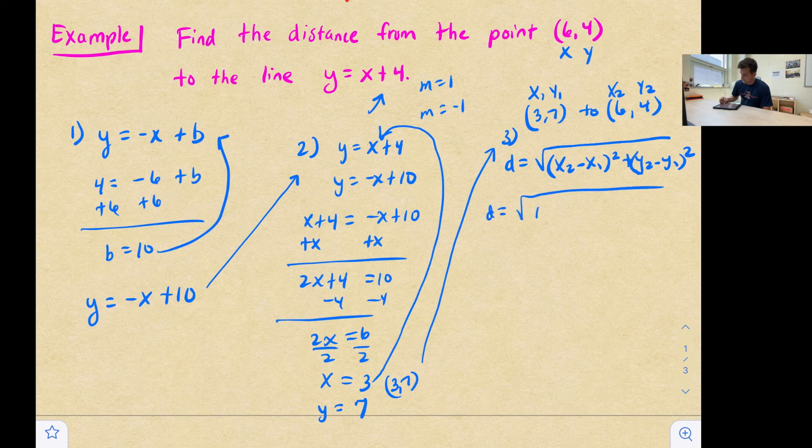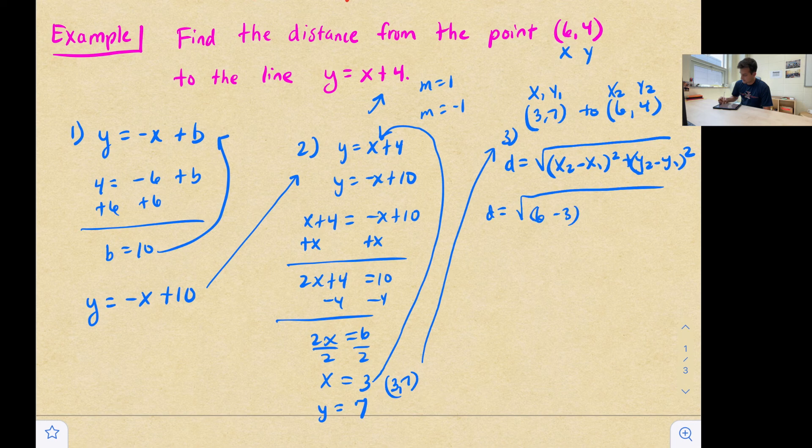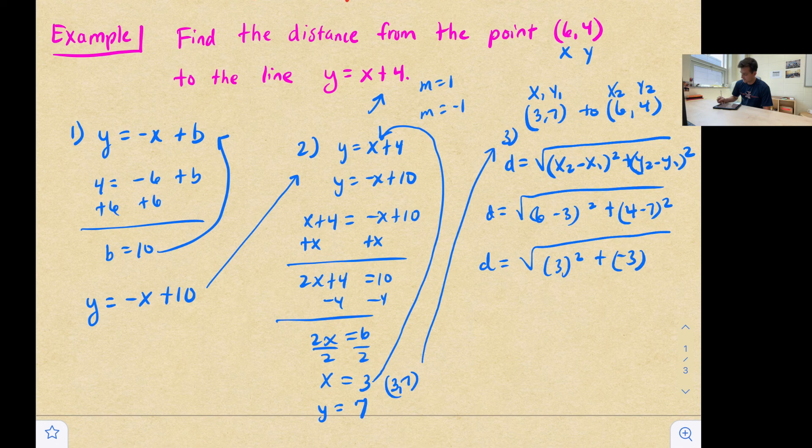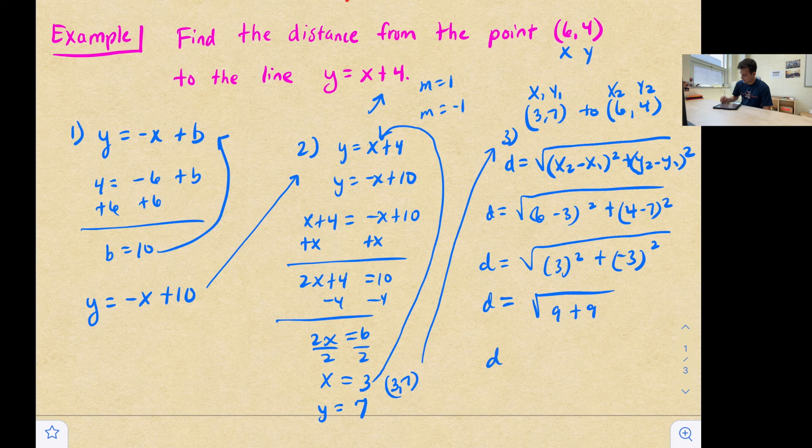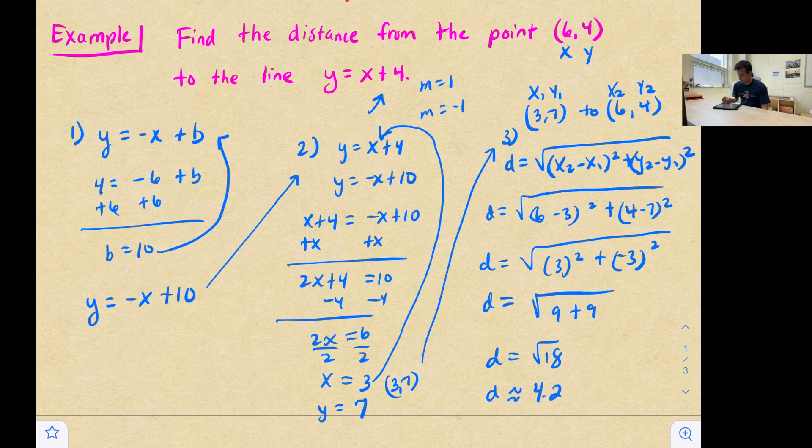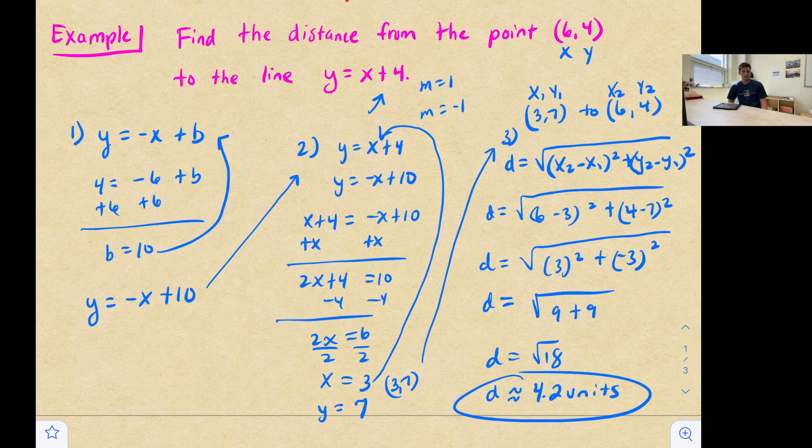So let's say six minus three squared, plus four minus seven squared. Six minus three is three, four minus seven is negative three. And we can say nine plus nine. So the distance is the square root of 18. So our most exact answer would be the square root of 18. But if the question asks for you to round, then you could type that in your calculator and say the distance is approximately four point two units. And that is how you find the distance from a point to a line.